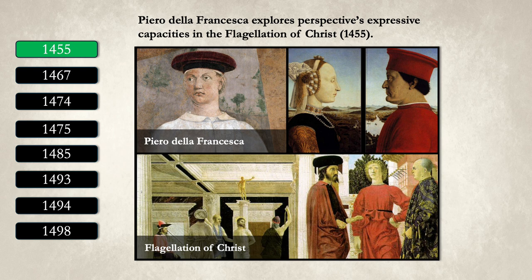In 1455, Piero della Francesca's The Flagellation of Christ showcased the expressive power of perspective, marking a milestone in Renaissance art. This masterpiece combines mathematical precision with profound spirituality, demonstrating how perspective can create depth and emphasize focal points, thus engaging the viewer emotionally.